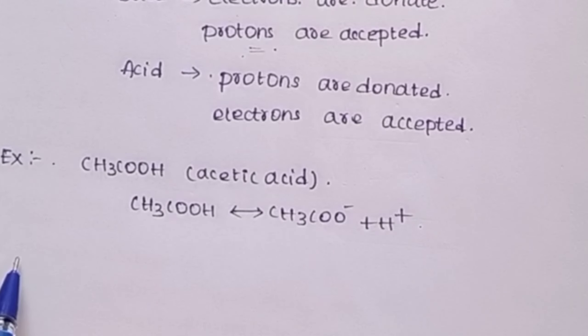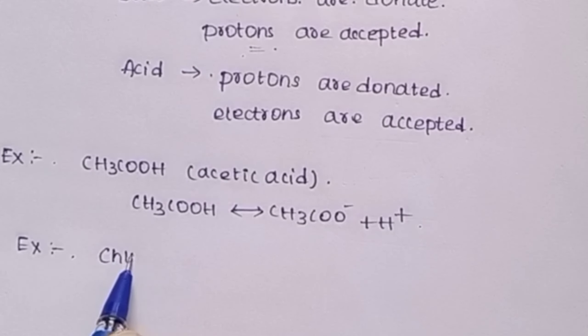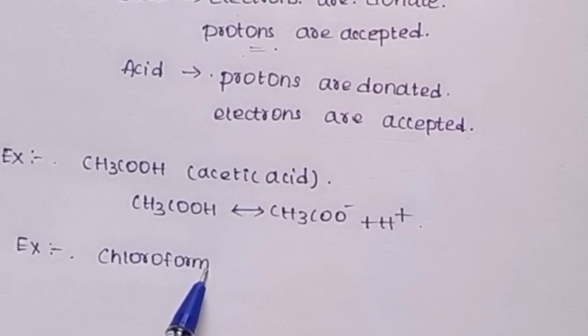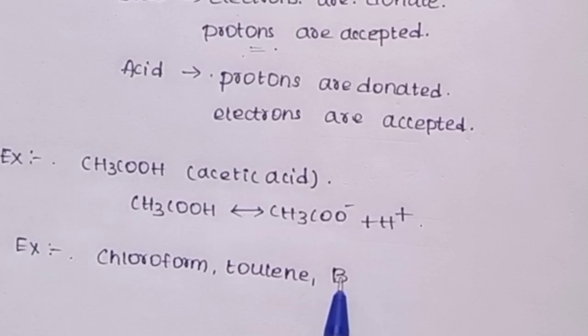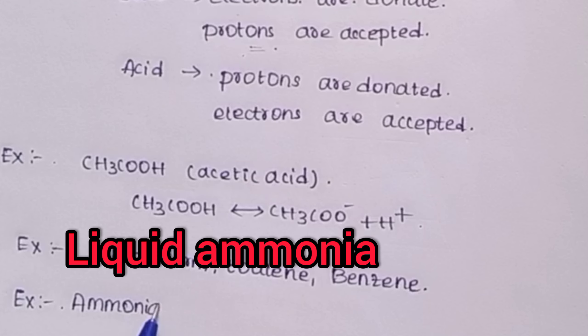What are the examples of aprotic solvent? Aprotic means no protons are accepted or donated. Examples of aprotic solvents are chloroform, toluene, and benzene. Easy to remember examples.